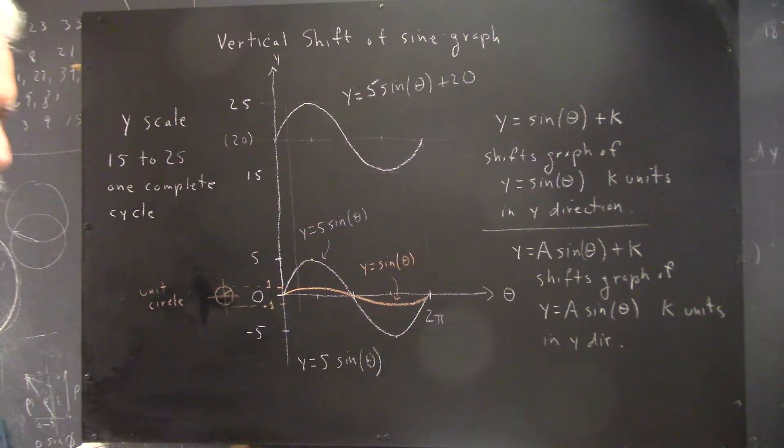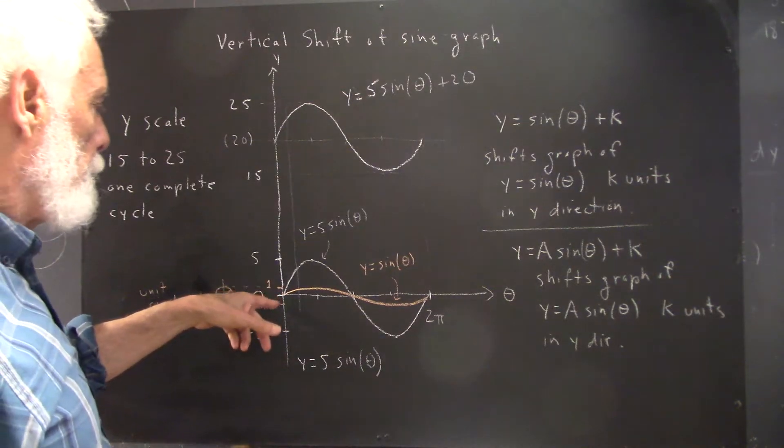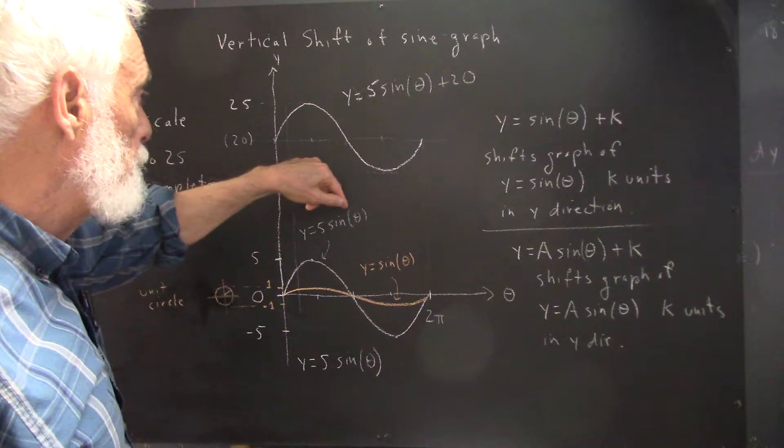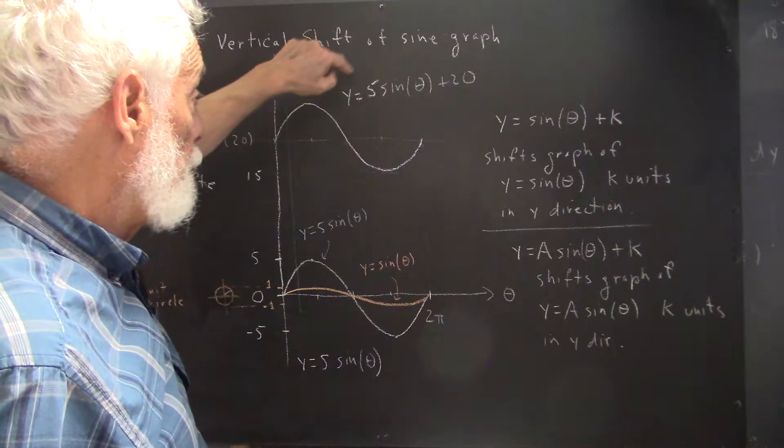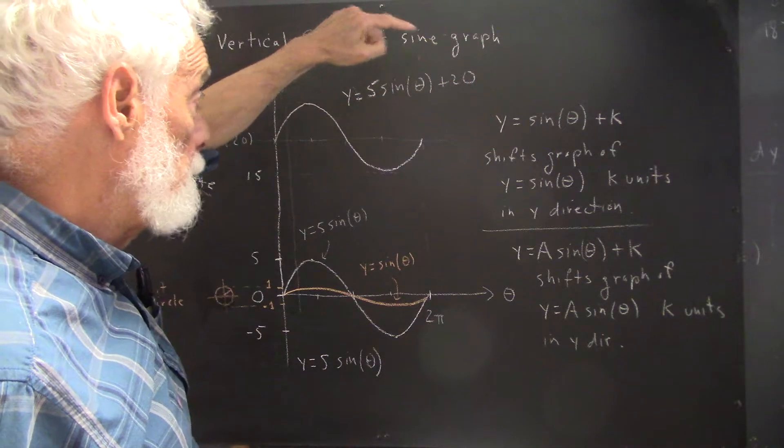Now we can take the preceding back to the very beginning. If this is a graph of y = 5sin(θ), which is then raised 20 units to get the graph of y = 5sin(θ) + 20,